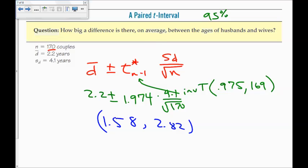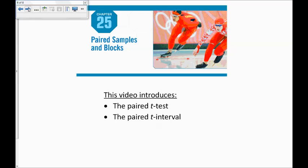There's my confidence interval. And then my conclusion in context is I'm 95% confident that the difference on average between the ages of husbands and wives is between 1.58 years and 2.82 years. And this video was about the paired t-test and the paired t-interval. Thank you so much for watching.